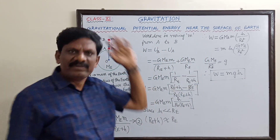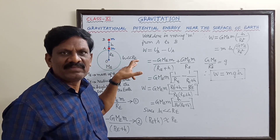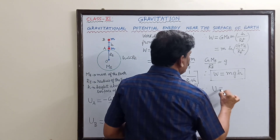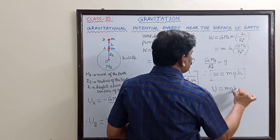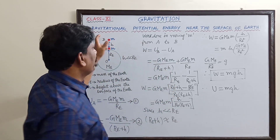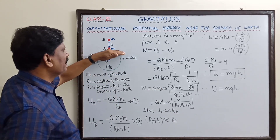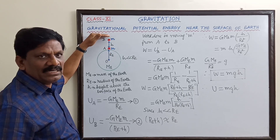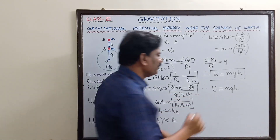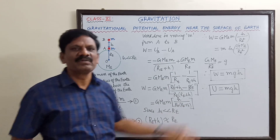This is how we derive that the gravitational potential energy of mass m at height h above the surface of the Earth is equal to mgh. The gravitational potential energy near the surface of the Earth is the work done in moving mass m from lower potential to higher potential, which equals U_B − U_A = mgh. I hope you understood well. Bye.